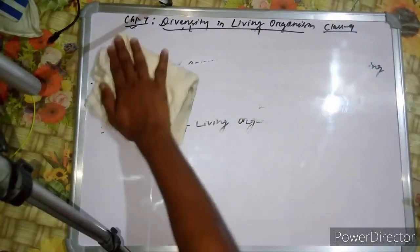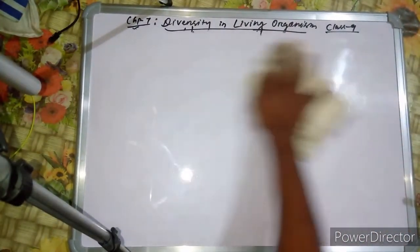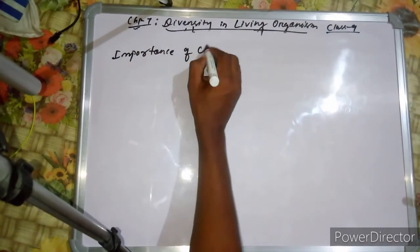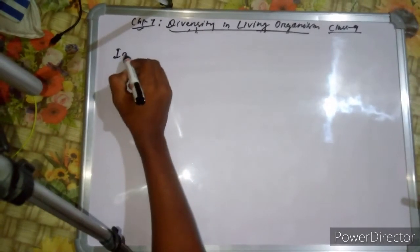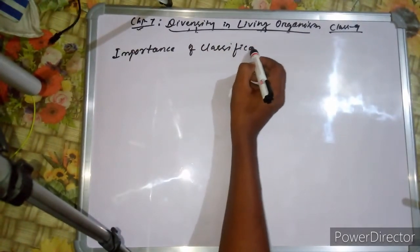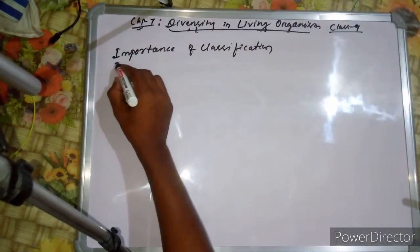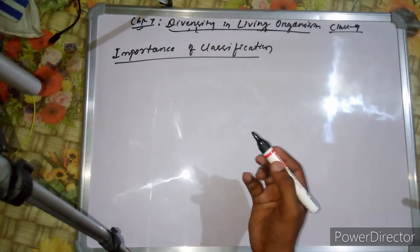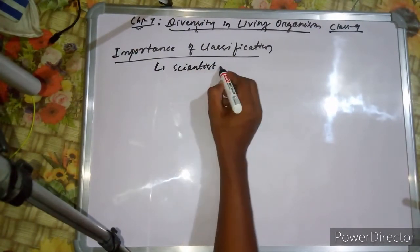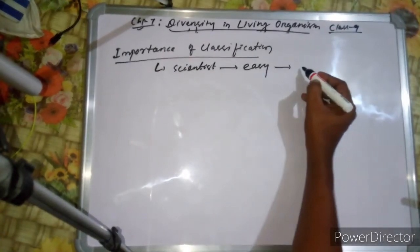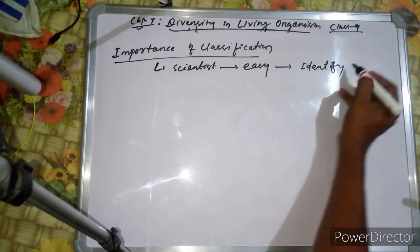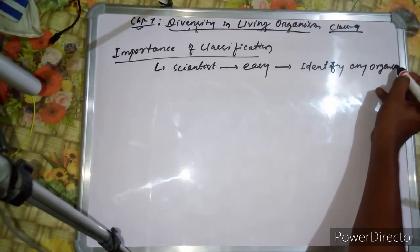Why do we do classification? What is the importance of classification? Classification makes it easy for scientists to identify any organism — easy to identify any organism.